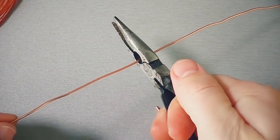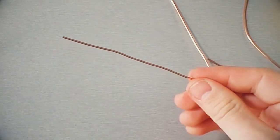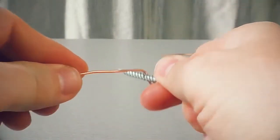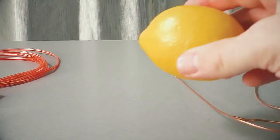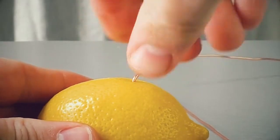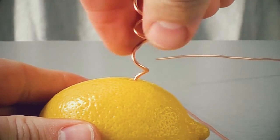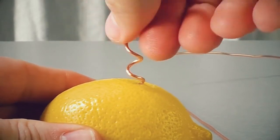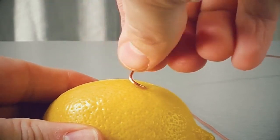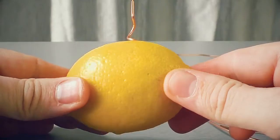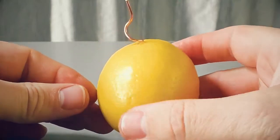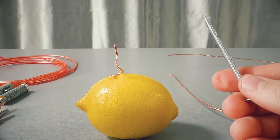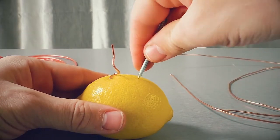Let's cut off a piece of copper wire and make a spiral out of it. Then I will insert this spiral into the lemon. Just like that. And next to the spiral, I will stick in the zinc-coated screw.